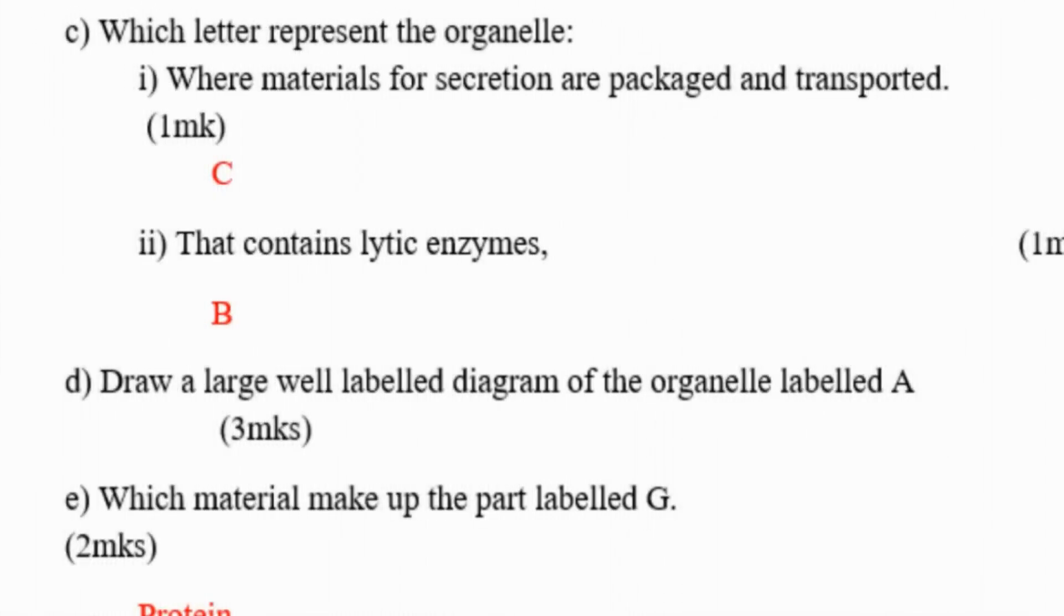Remember we were looking at the animal cell. You are told which letter represents the organelle: Roman one, which materials for secretion are packaged and transported, that is C. Part that contains lytic enzymes, that is part B as you have seen in the organelle. Draw a large, well-labeled diagram of organelle labeled A.